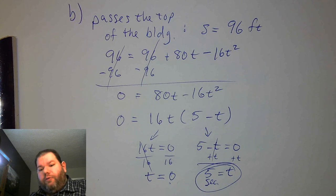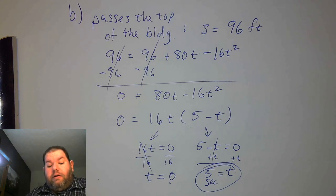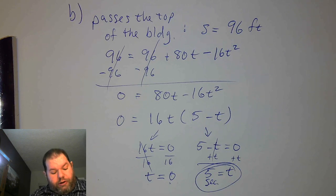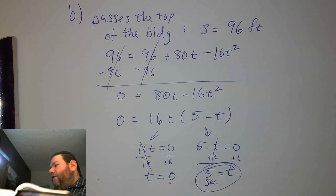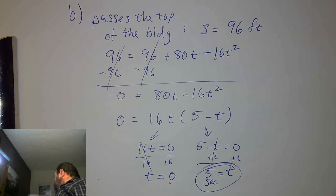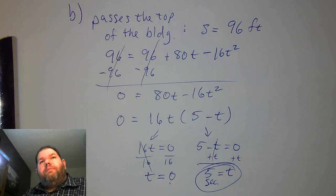Gabriel wanted to see one more like that. I believe we still have problem 102, although it's not quite as interesting because it's not factorable and will take more work. I did work one last week, though we didn't do the passing-the-top-of-the-building aspect — I just did when it hit the ground.